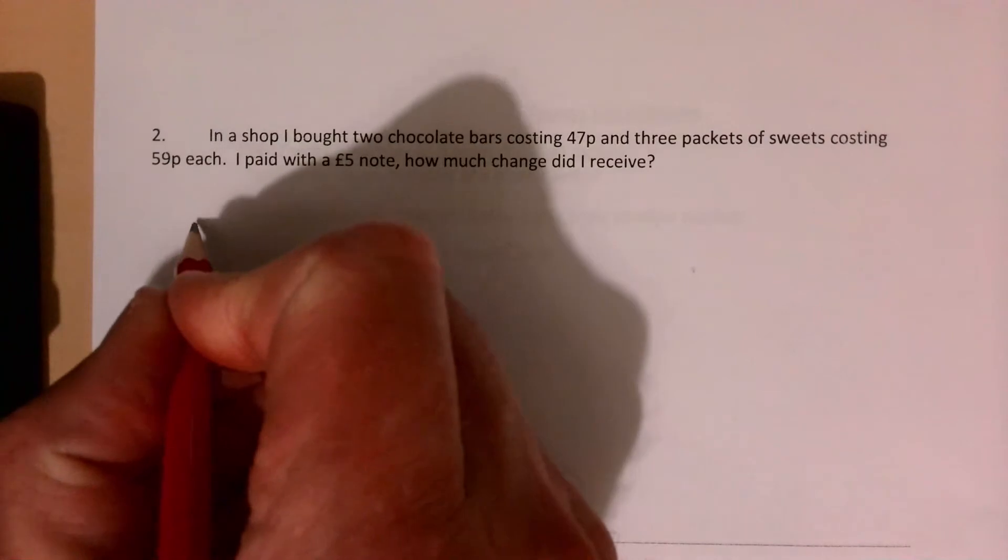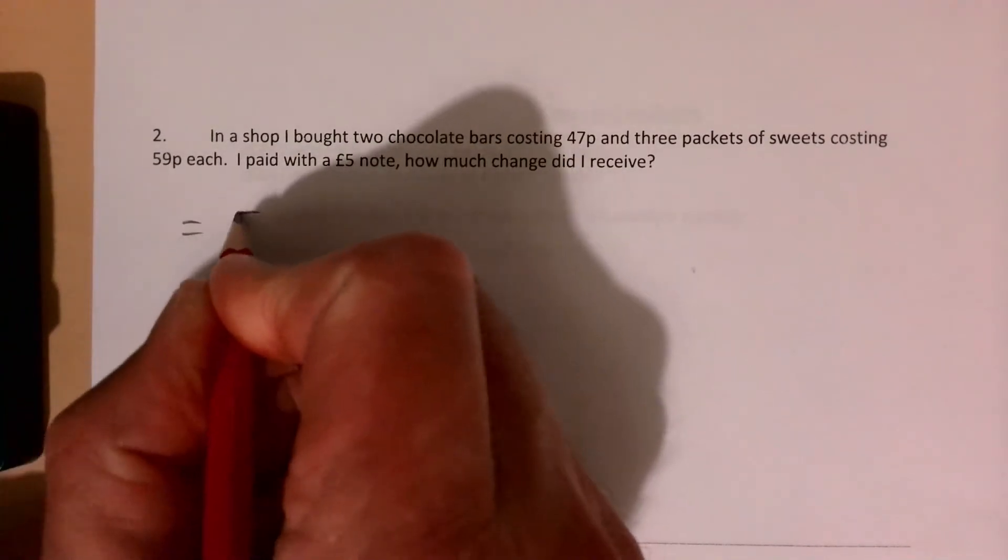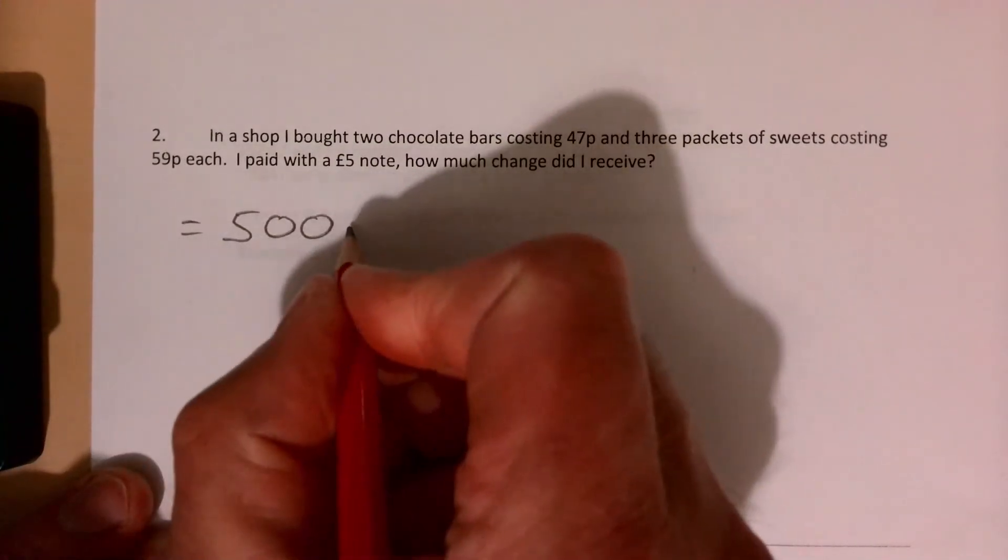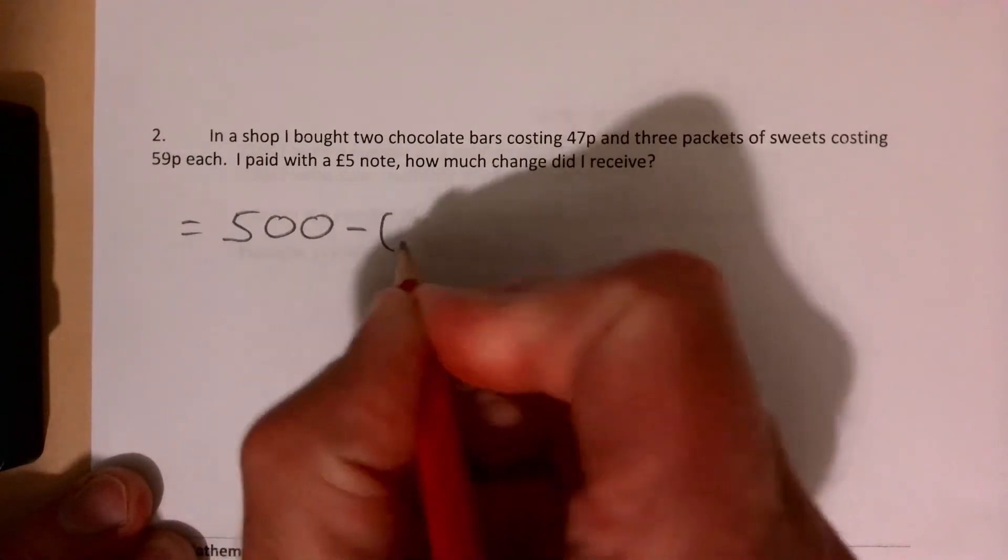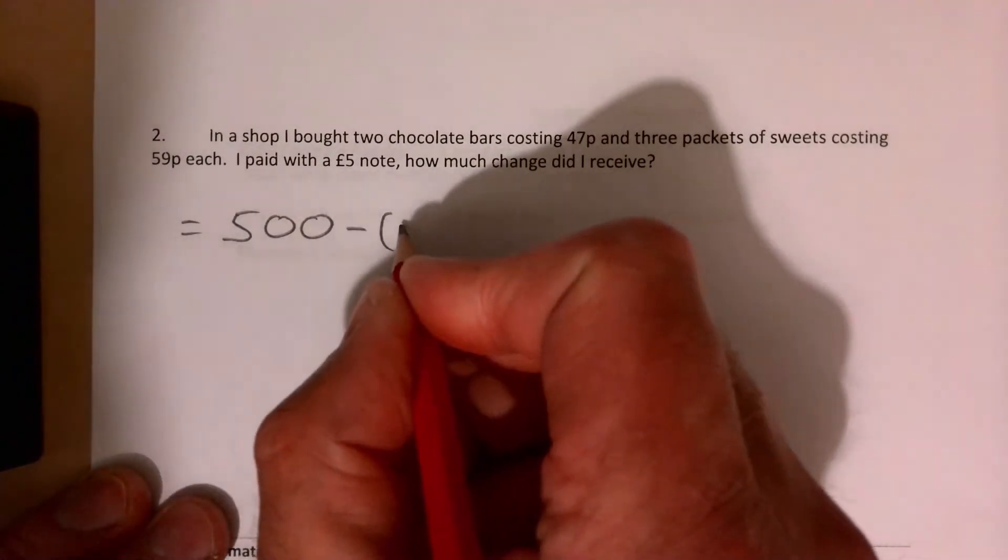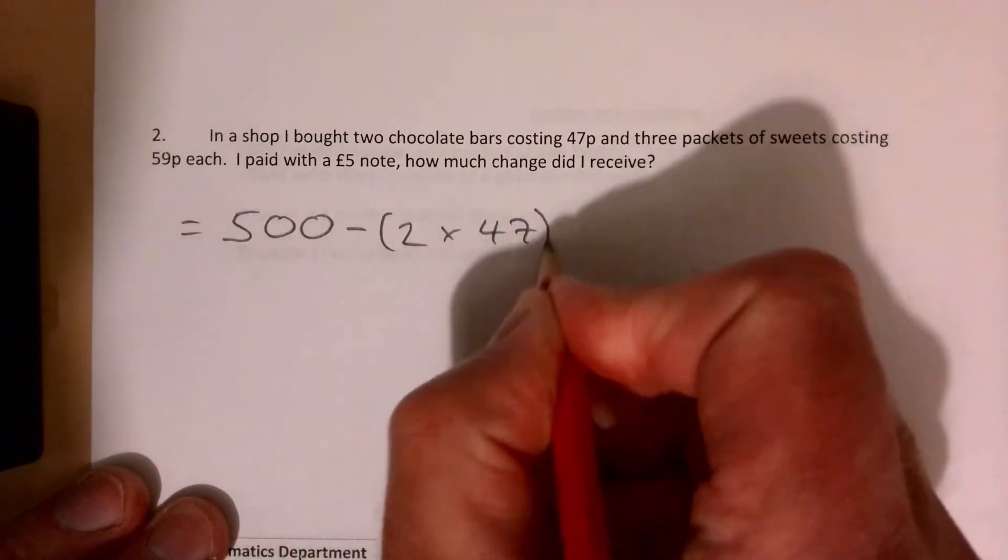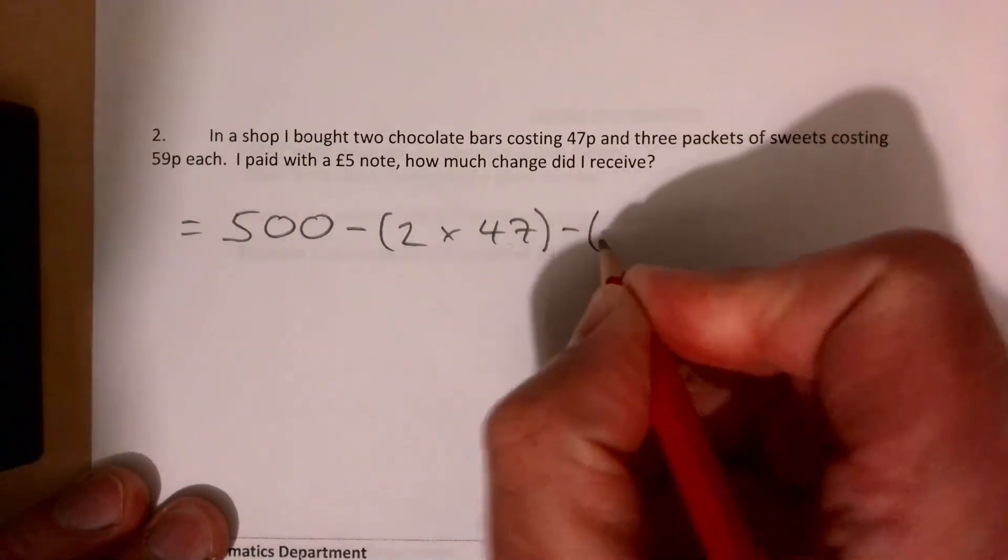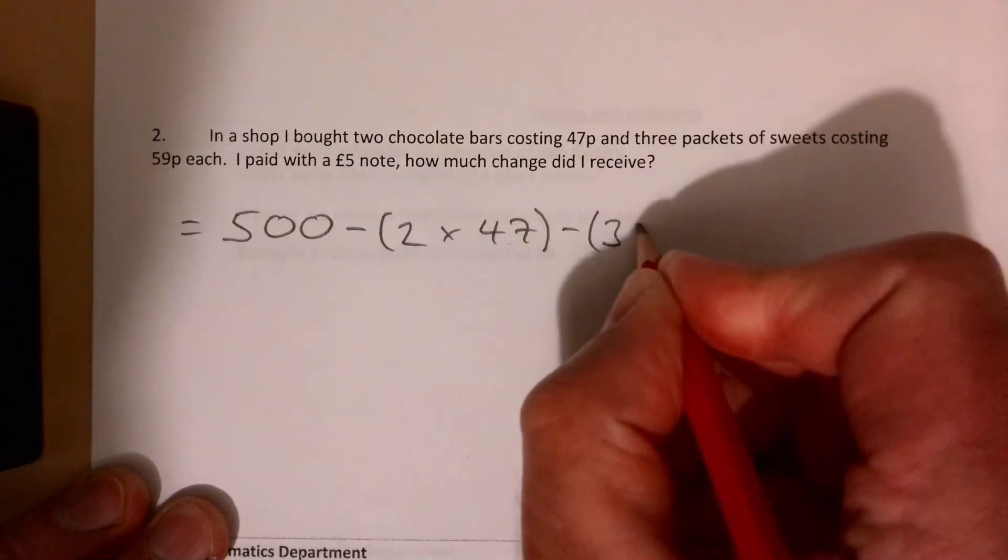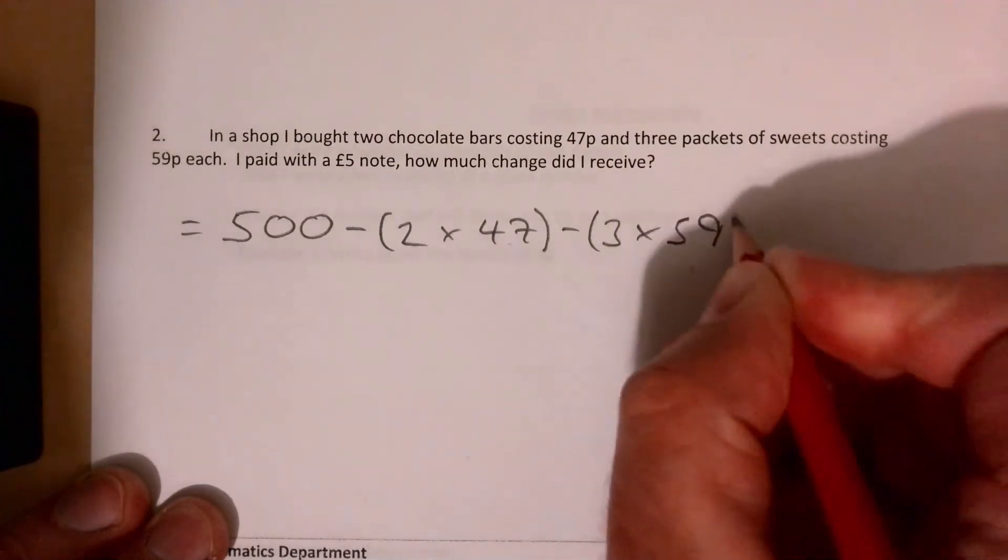So it's going to be - let's do this as a big long sum and I suppose it's a BIDMAS question. So it's 500 take away 2 times 47, take away 3 times 59.